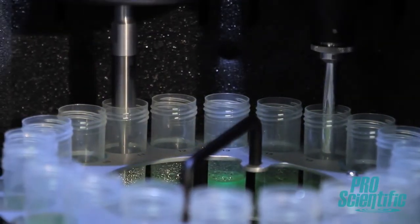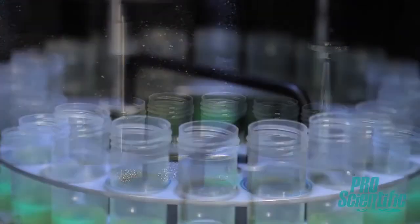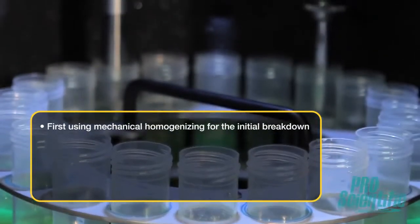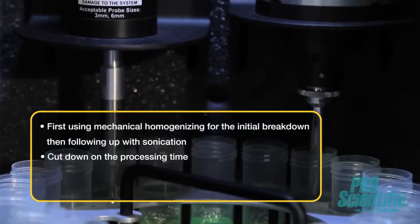The DPS20's dual processing mode takes the benefits of each method and utilizes them together without any of the downsides. By first using mechanical homogenizing for the initial breakdown and then following up with sonication, you cut down on the processing time compared to having used either homogenizing method independently. This means faster, more efficient sample breakdown with less chance of degrading your sample.